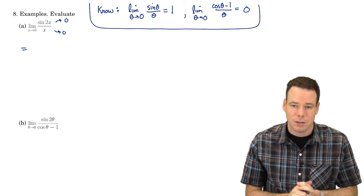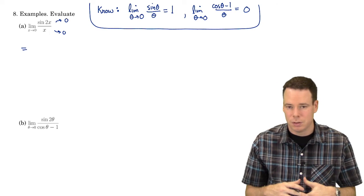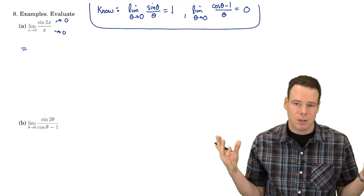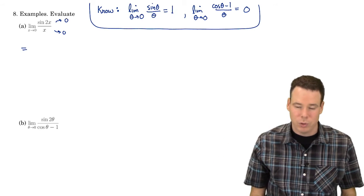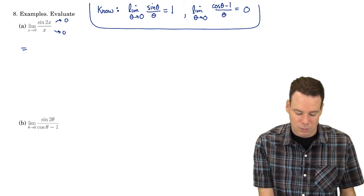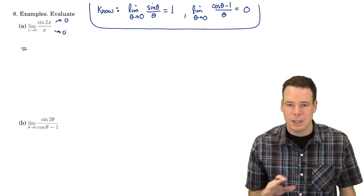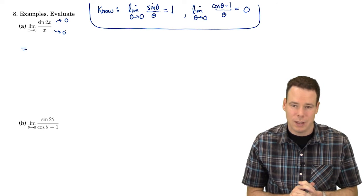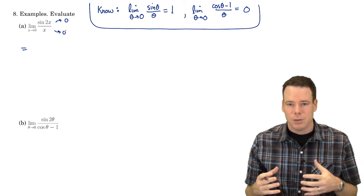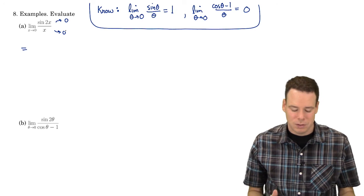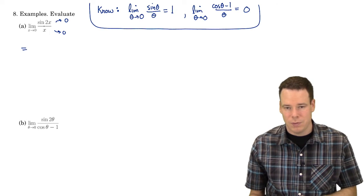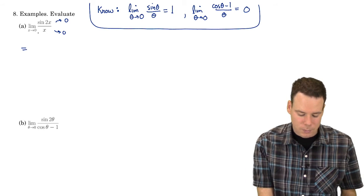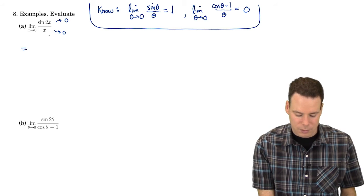We don't know — it could do anything. It could go to 0, could go to some finite number other than 0, could go to positive or negative infinity. Who knows? Whenever it's of type 0 over 0, it's an indeterminate form. In other words, we can't determine what the answer is from that information alone. We need to figure out how fast the various things are going to 0 — how fast does the top go to 0, how fast does the bottom go to 0, what's the relationship between the two? So there's more work to do.